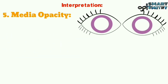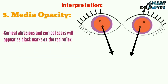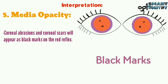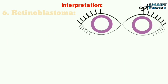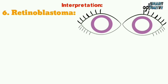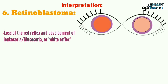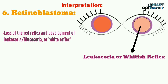5. Media opacities: Corneal abrasion and corneal scar will appear as black marks on the red reflex. 6. Retinoblastoma: Loss of red reflex and development of leukocoria, or white reflex.